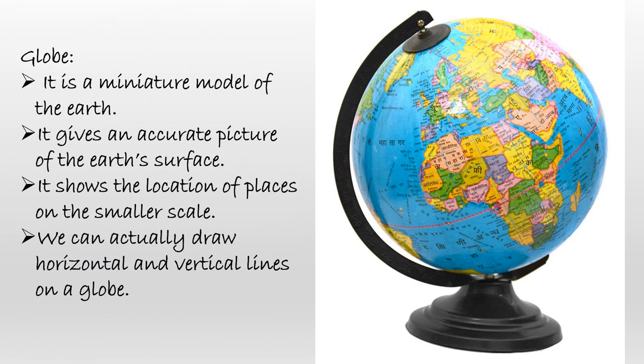This is a picture of a globe. A globe is a miniature model of the earth. It gives us an accurate picture of the earth's surface. A globe also shows the location of places on the smaller scale. We can actually draw horizontal and vertical lines on a globe.